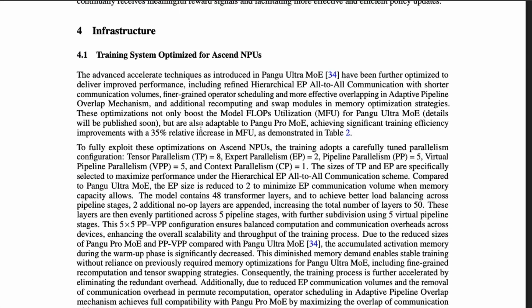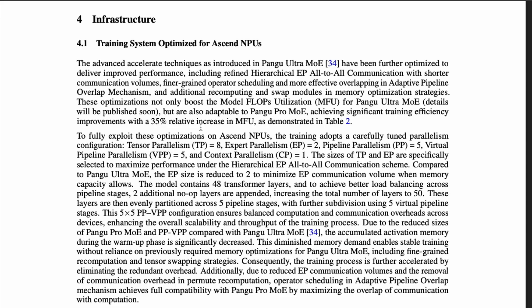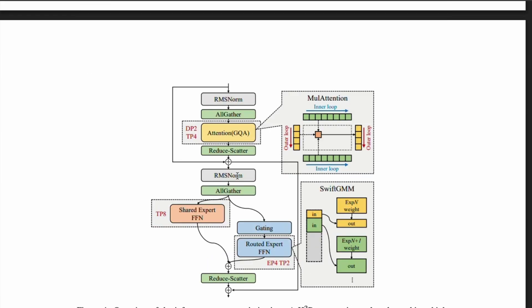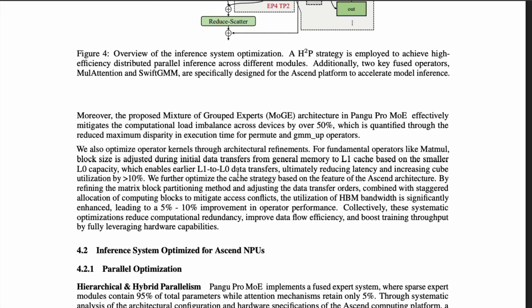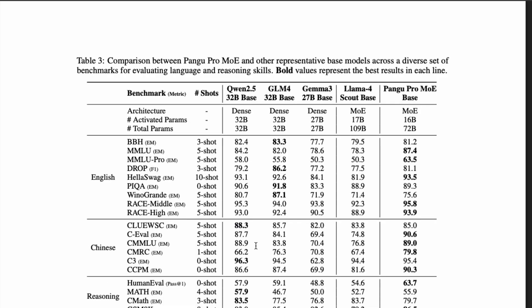This helps achieve what MoE could not, by balancing all groups and minimizing the imbalance score to nearly zero. Another interesting aspect of this paper is that they've not only shared the novel training technique, but also how they've enabled a highly efficient inferencing system. You can read about the inference optimizations they've done for deploying large language models on Huawei's Ascend NPU systems — especially relevant for companies looking to deploy at scale.